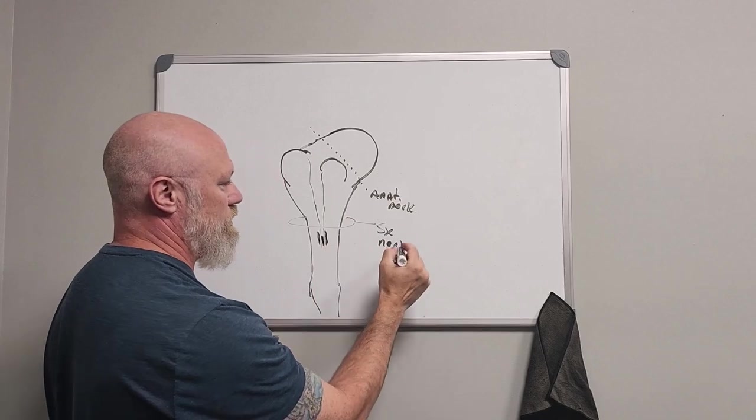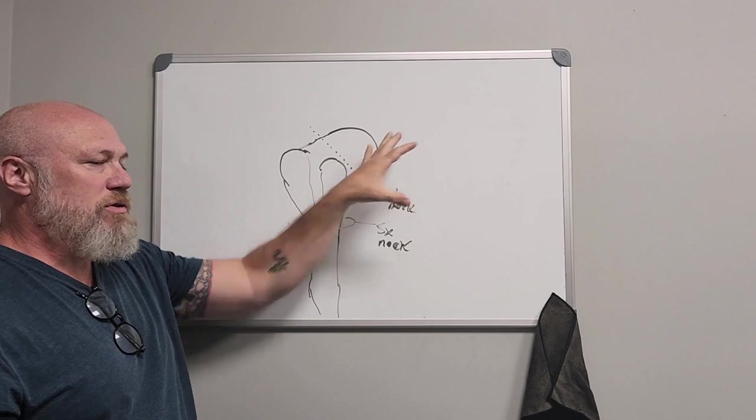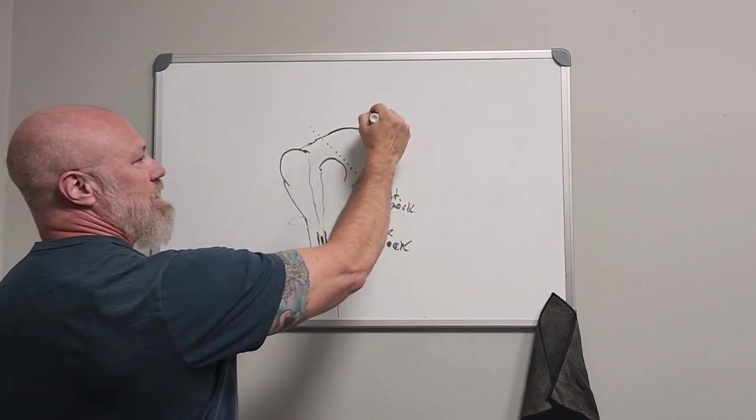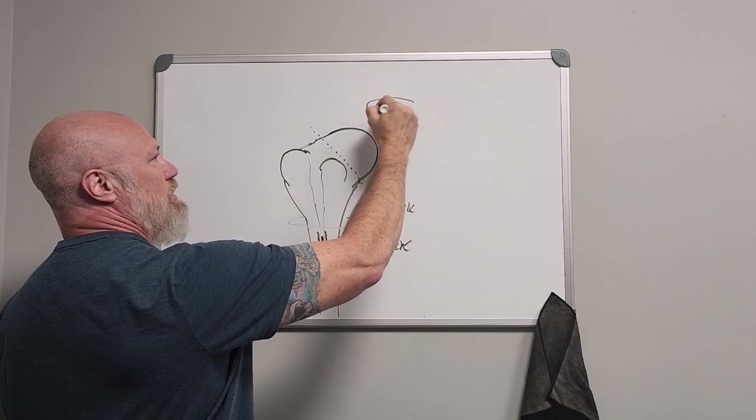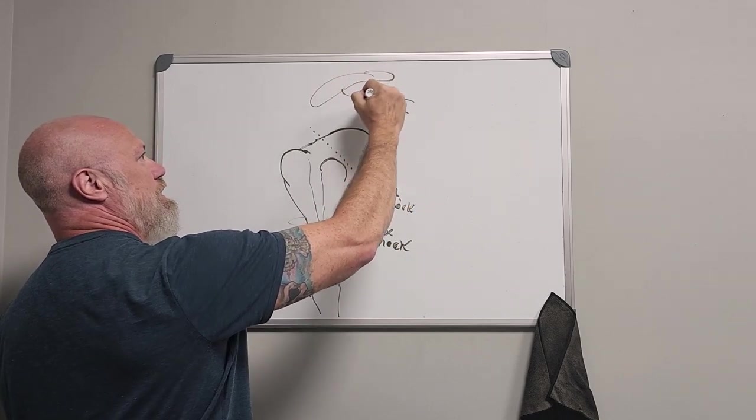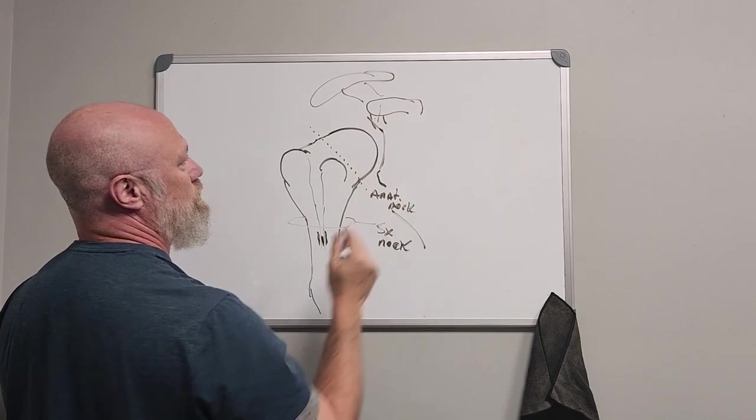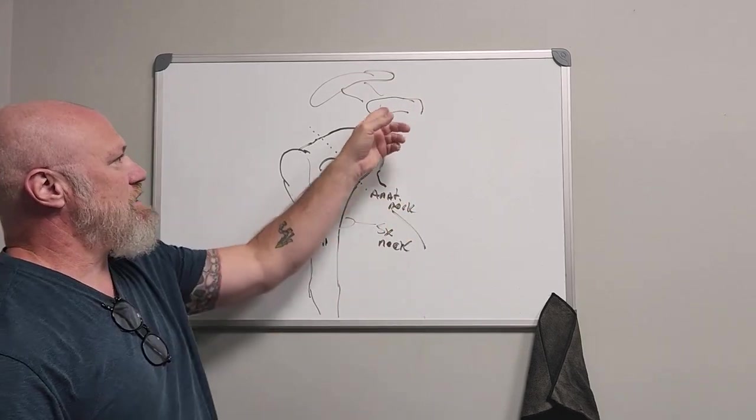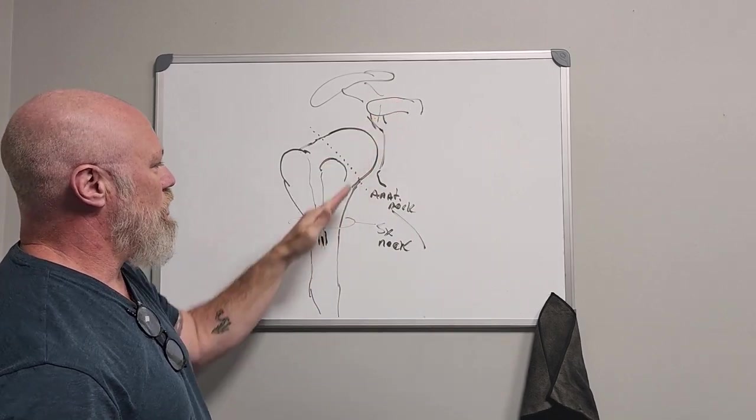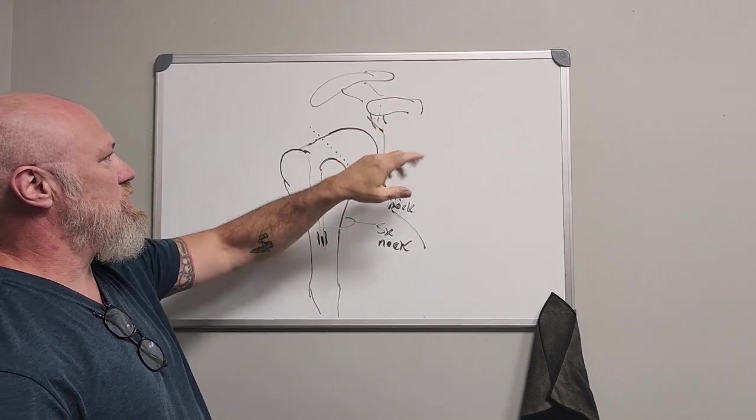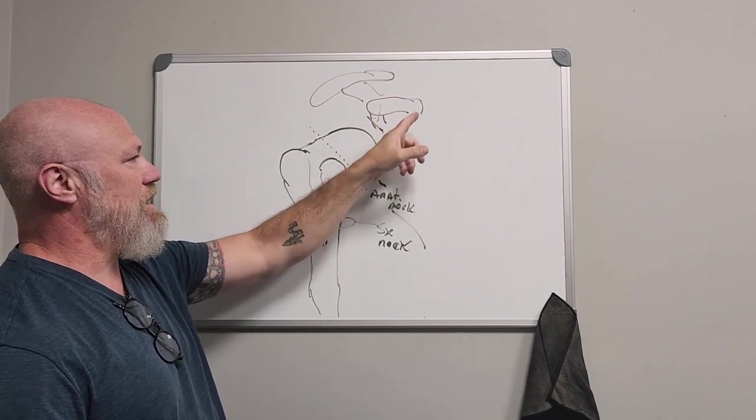So let's talk about where the rotator cuff muscles... Remember your glenoid, glenoid fossa will be here, and then you've got your coracoid and your acromion up here. Your coracoid process is going to have your pec minor come down, and then you're going to have your coracobrachialis that's going to insert, and the short head of the biceps brachii is going to insert there.